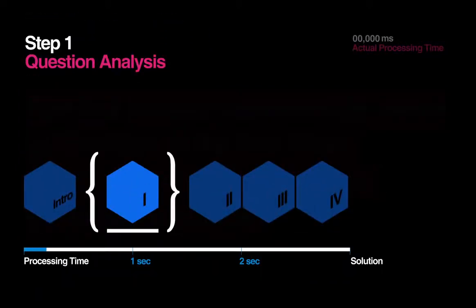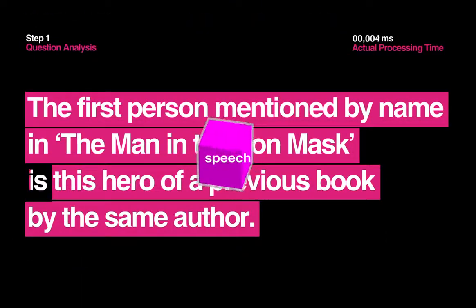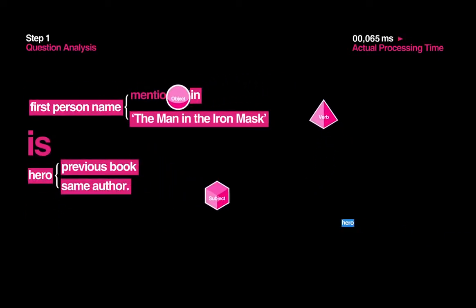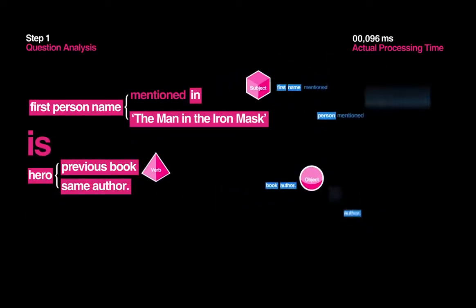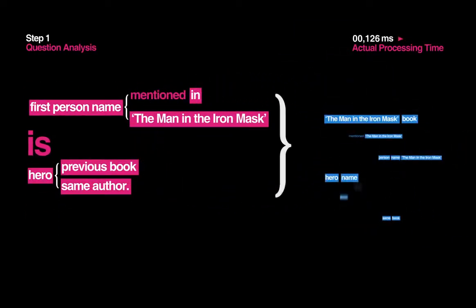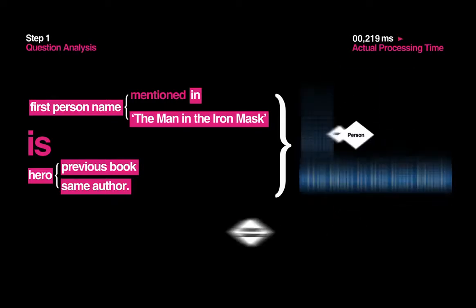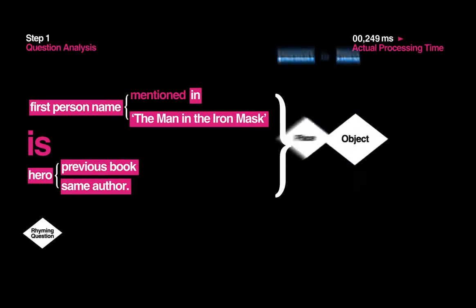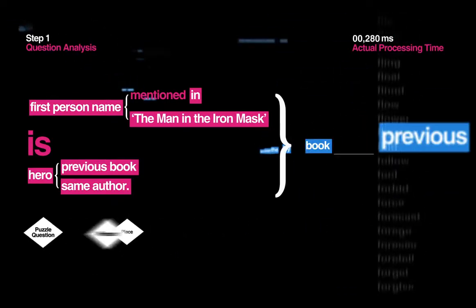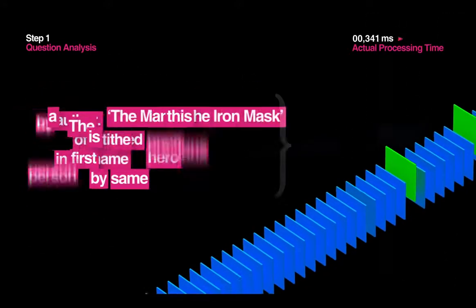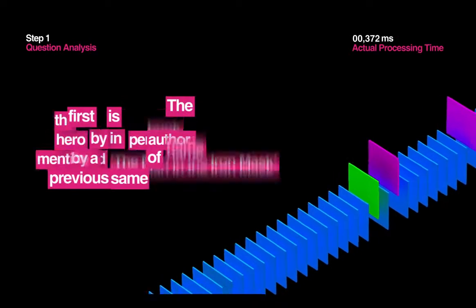Step 1: Question Analysis. The first thing Watson does is parse the question into its parts of speech and identify the different roles the words and phrases in the sentence are playing. This helps Watson determine two distinct things: what type of question is being asked, and what the question is asking for. During this early stage of the process, Watson doesn't know how to find the best answer yet, so it increases its chances by looking at many different options of what the question might be asking for.